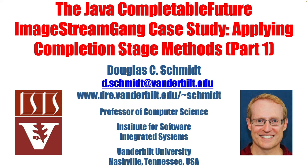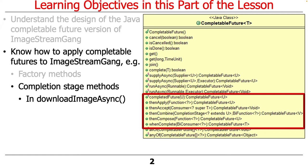We're now going to turn our attention to some examples that illustrate how to apply completion stage methods from the CompletableFutures framework in the context of the ImageStreamGang case study. We're going to show these in the context of the DownloadImageAsync method, which will call some completion stage methods that come out of the CompletableFutures framework.